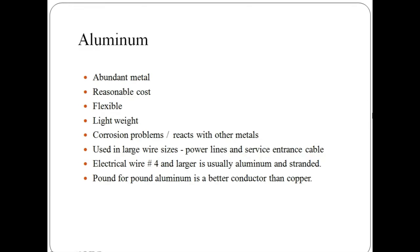Most commonly used conductor is aluminum. These metal are available at large quantity. Thus it has reasonable cost. These metal are flexible and easily drawn into wires. They have light weight. There is corrosion problem with this metal as it reacts with other metal.